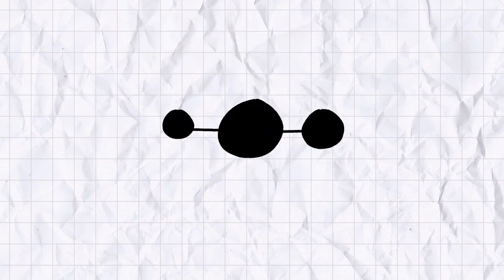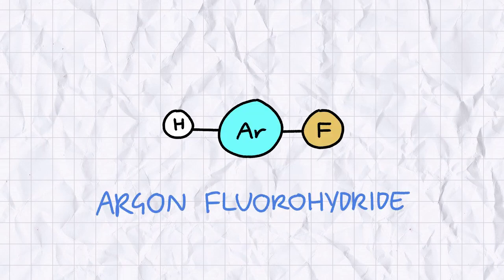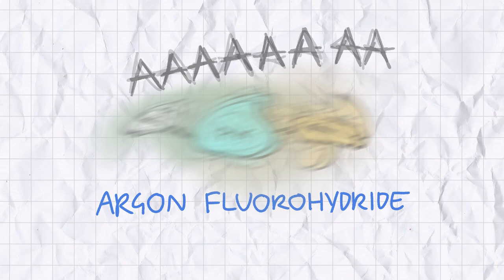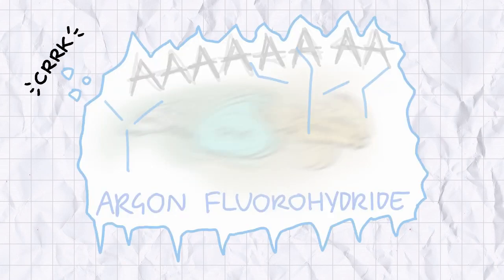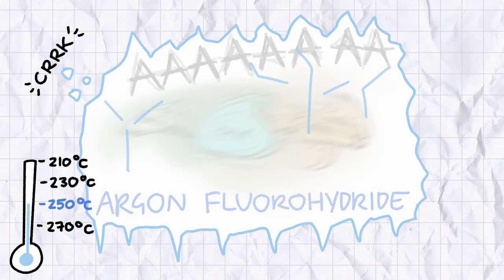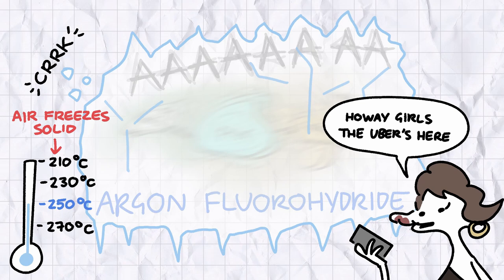One of the only argon compounds that has ever been synthesized a few molecules at a time is argon fluorohydride, a compound so unfathomably cursed and unstable it can only be handled at a chilly minus 250 degrees Celsius, which for reference is a bit colder than the freezing point of air, but not quite cold enough for a Geordie girl to put a coat on for a night out.